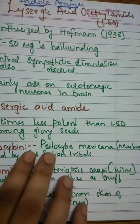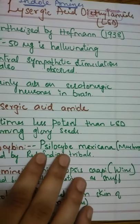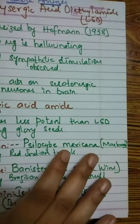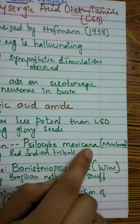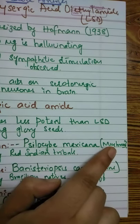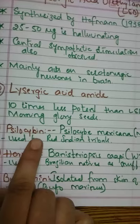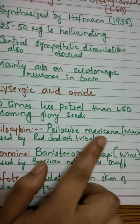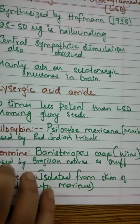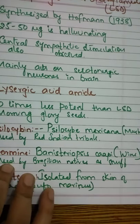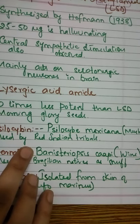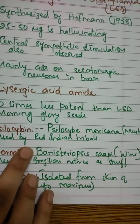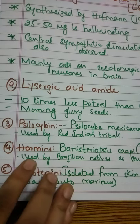Next is psilocybin, which is mainly found in Psilocybe mexicana, a Mexican mushroom. As the name suggests, it originates from Mexico. This drug is mainly used by Red Indian tribals during religious rituals.